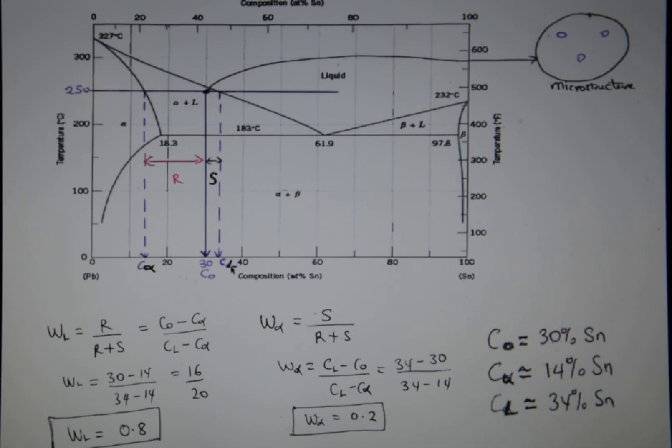And S is C L minus C naught and R plus S is C L minus C alpha and that gives 0.2. Now remember the weight fractions always have to add up to 1. So 0.8 plus 0.2 will give 1.